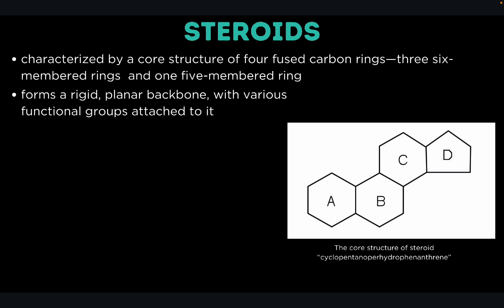Let's start with steroids. Steroids are a class of lipids characterized by a structure of four fused carbon rings — three six-membered rings called cyclohexane and one five-membered ring called cyclopentane. This structure forms a rigid, planar backbone with various functional groups attached at different positions on the ring, giving a variety of steroids.